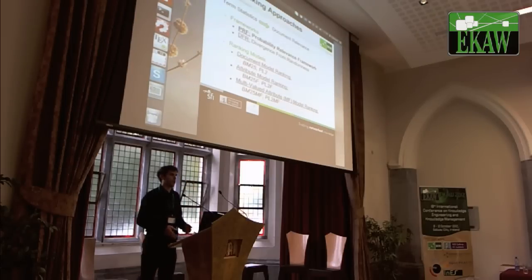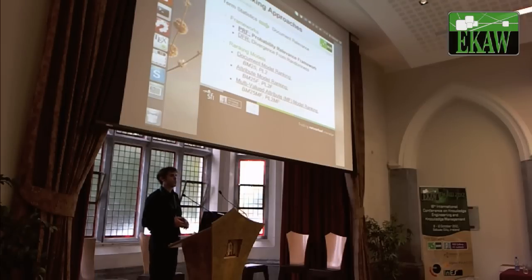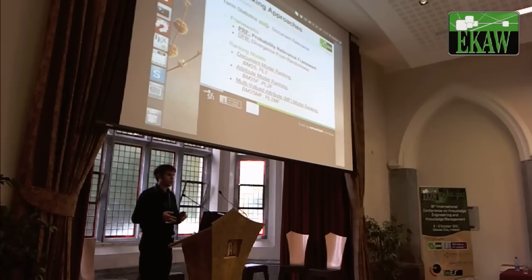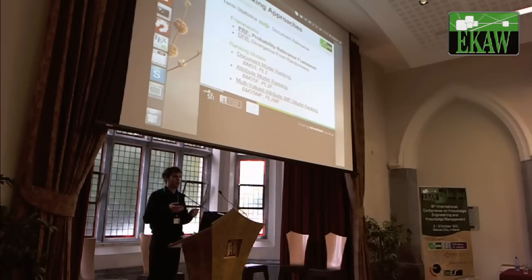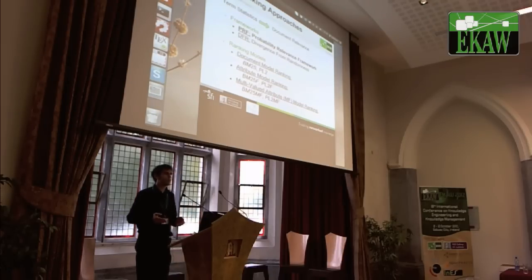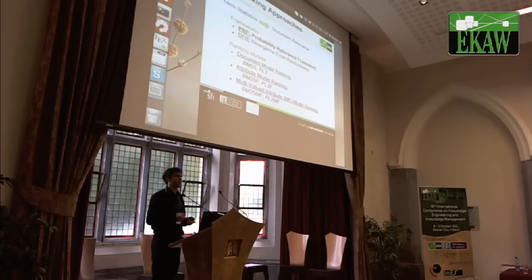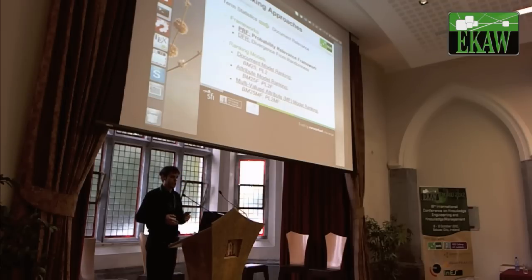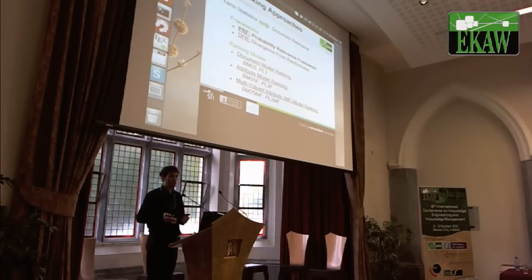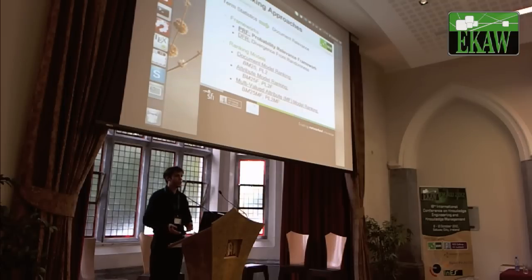There exist many entity ranking approaches, but we will consider here only two of them. The first is the PRF — the Probability Relevance Framework — which bases the ranking on the relevance probability of a document with regard to a query. We also have the DFR framework, which stands for Divergence From Randomness. The difference is that it estimates how much the term distribution in the document differs from a random distribution — if it differs a lot, we say it's relevant.